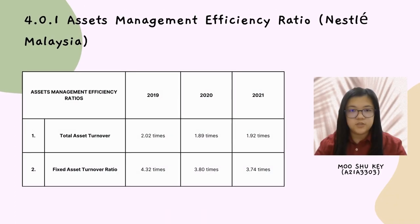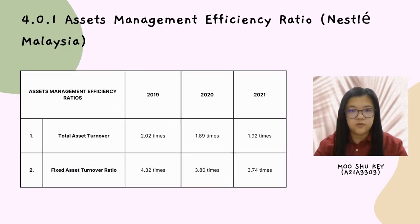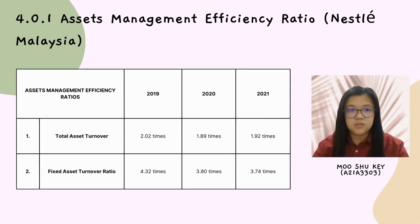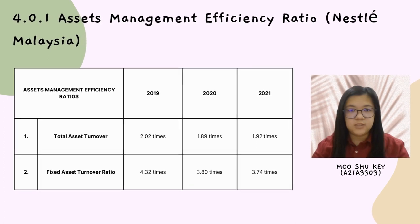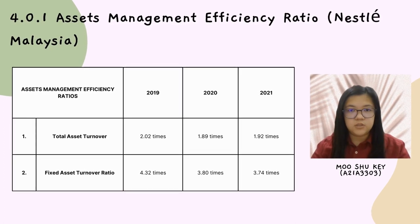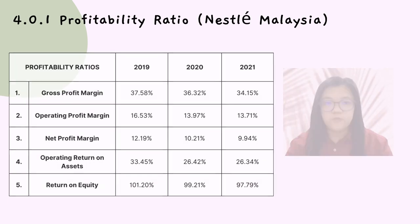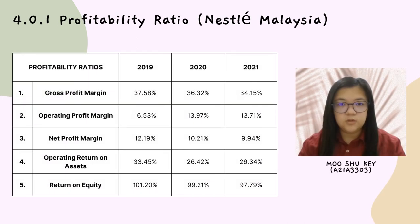Asset management efficiency ratio of Nestlé Malaysia: the total asset turnover and fixed asset turnover ratio decreased since 2019. Profitability ratio includes gross profit margin, operating profit margin, net profit margin, operating return on assets, and return on equity. All of these decreased from year 2019 to 2021.